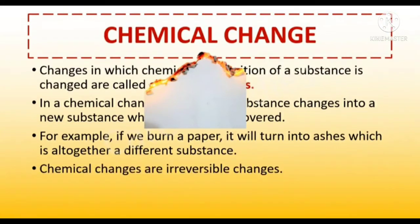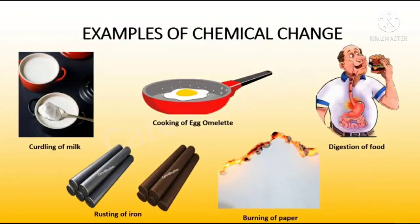Chemical changes are irreversible changes. Some examples of chemical changes are milk into curd, cooking of egg omelet, digestion of food, rusting of iron, burning of paper, etc.